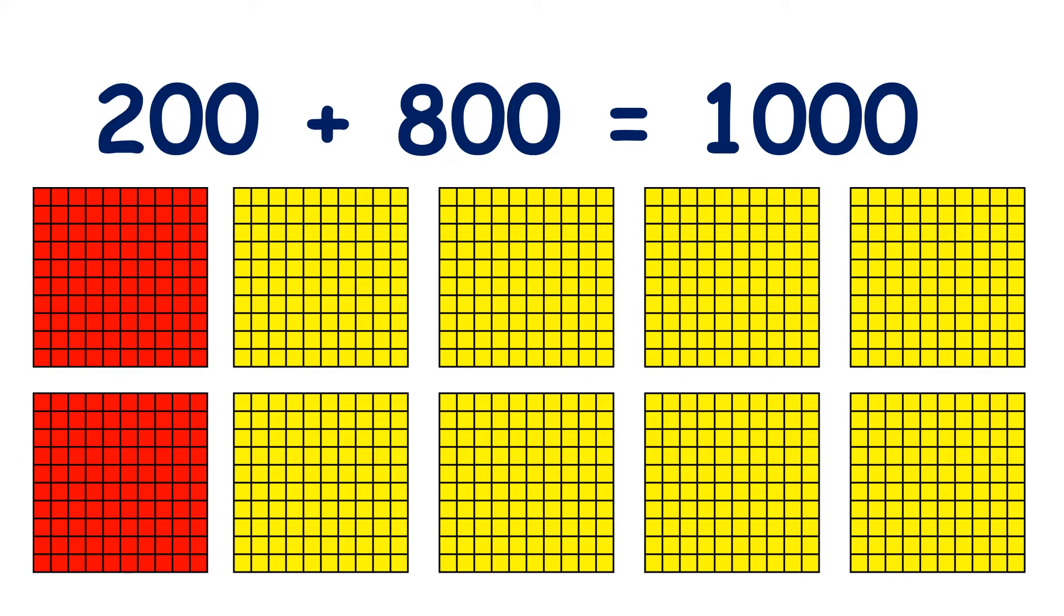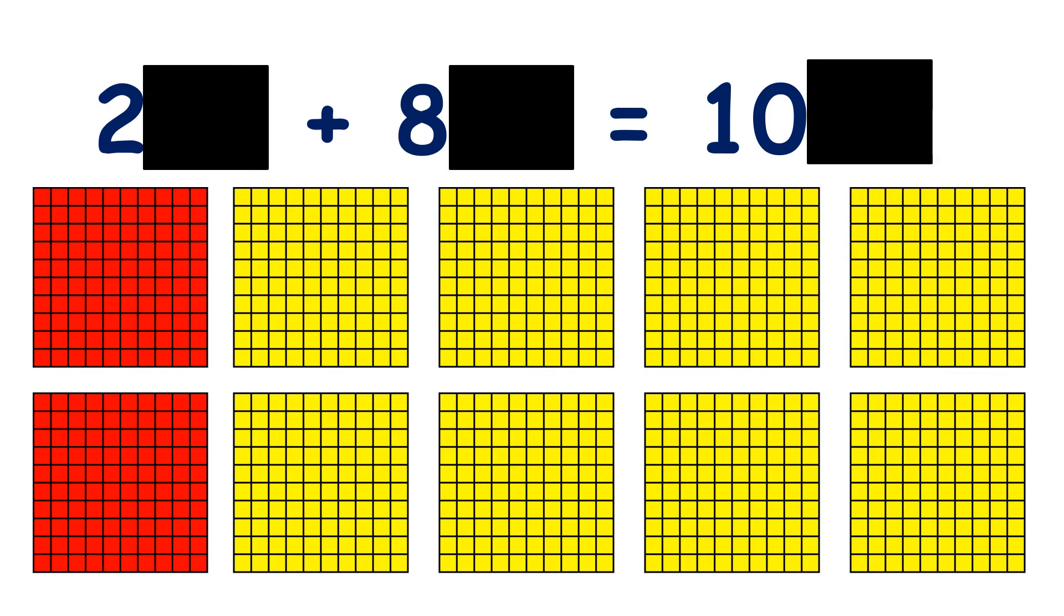We could also make a thousand with two hundred plus eight hundred, because two plus eight makes ten.